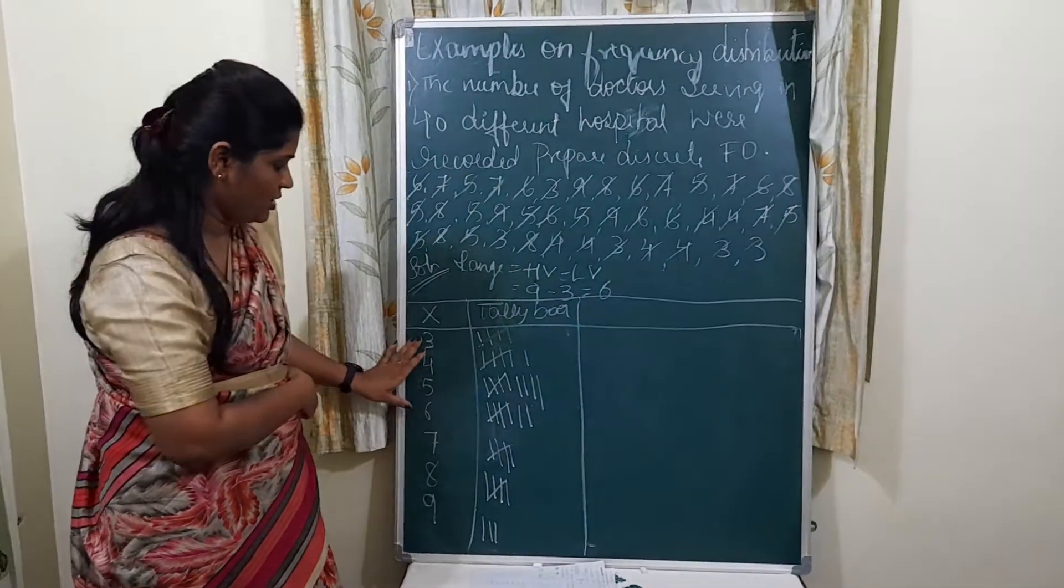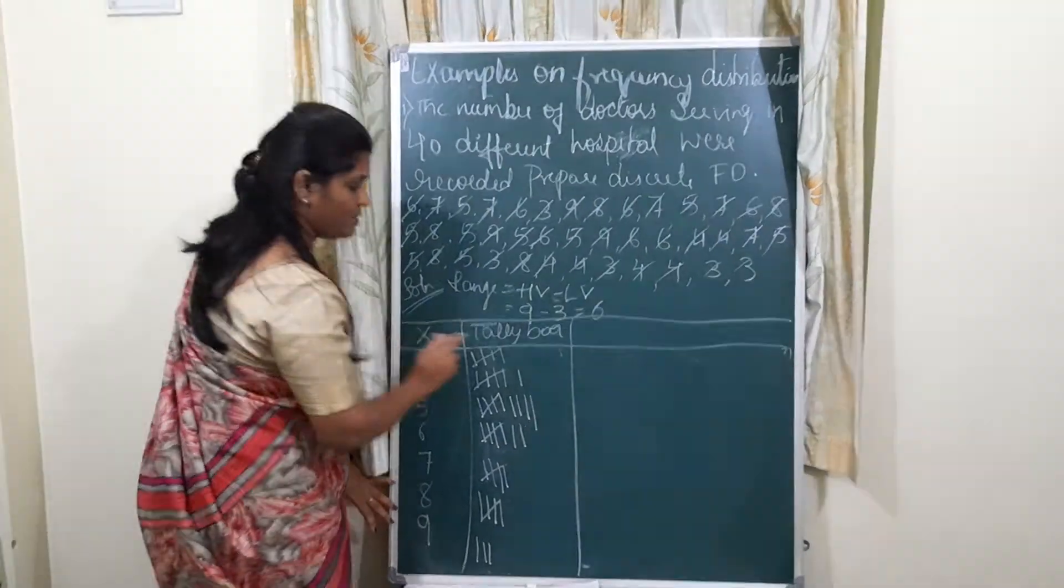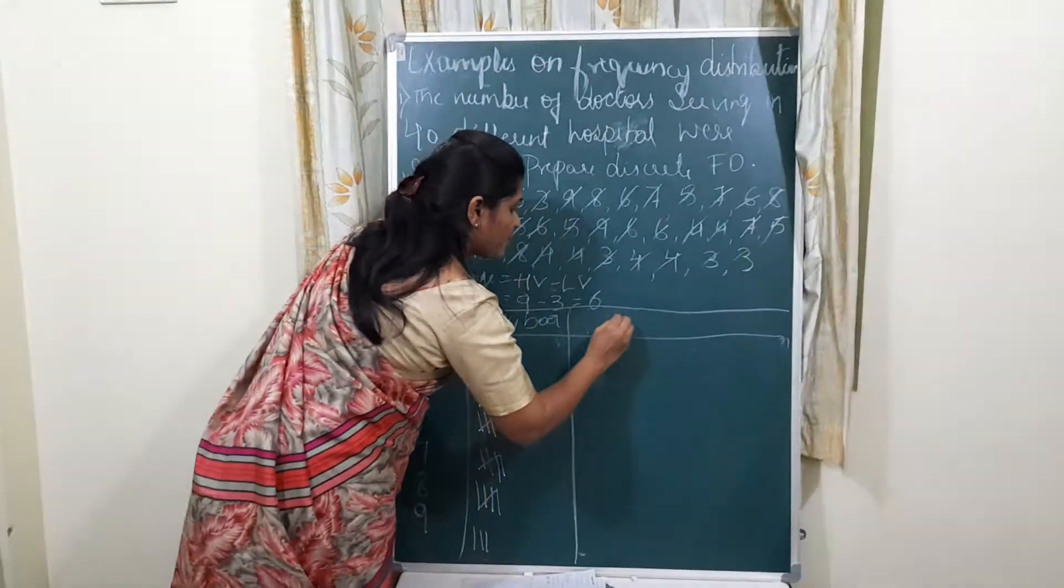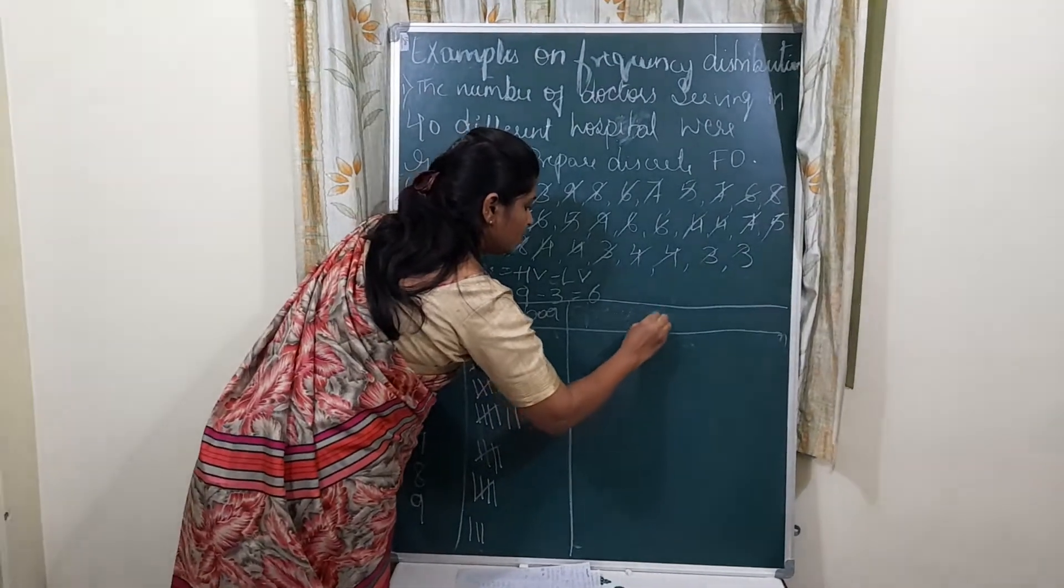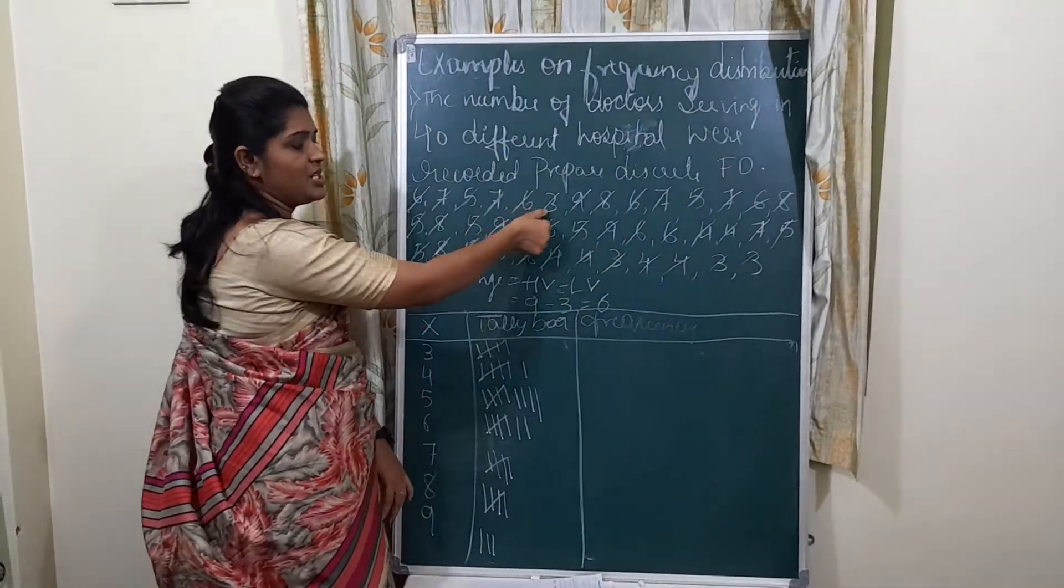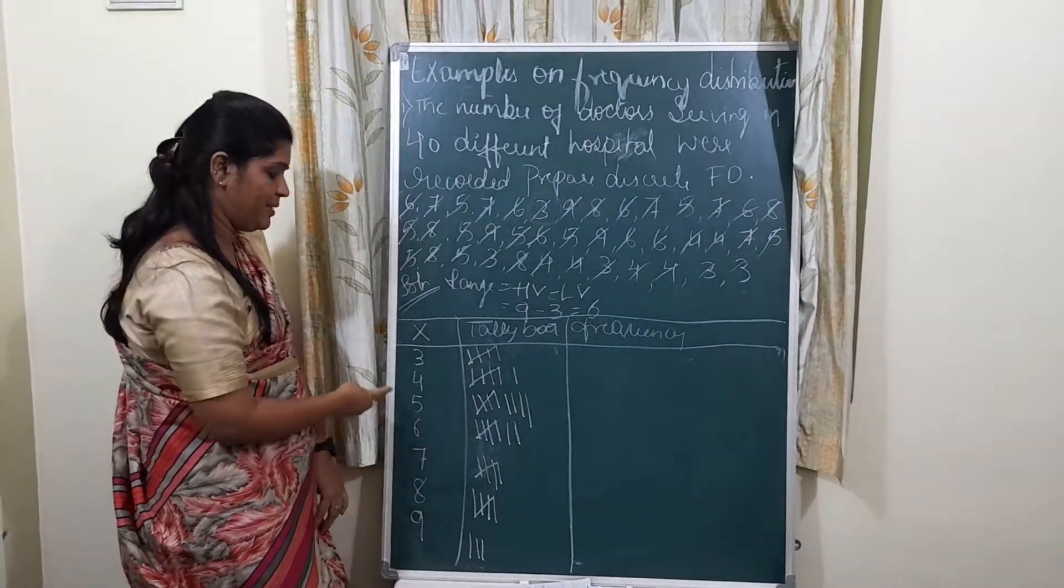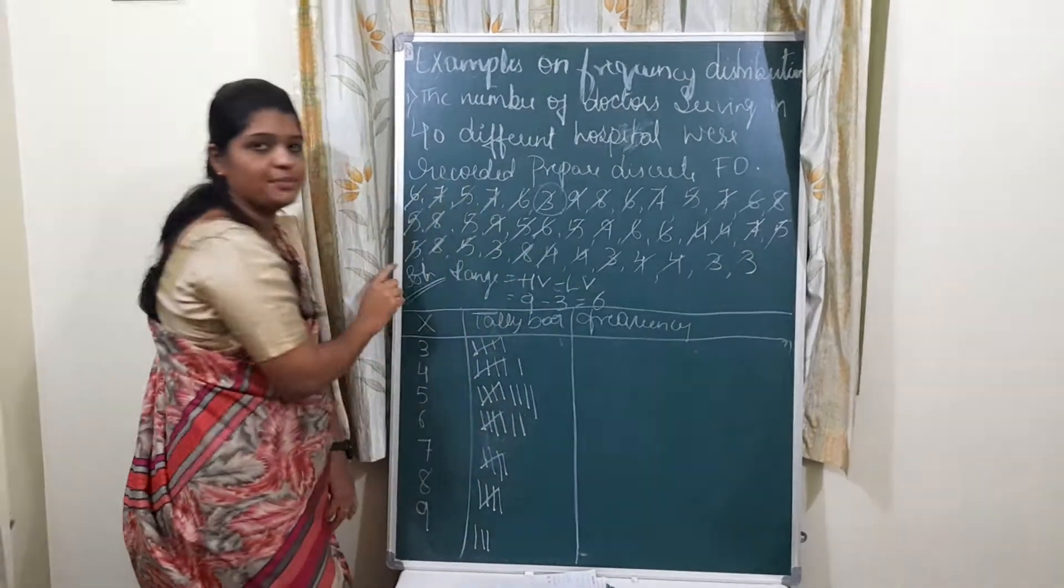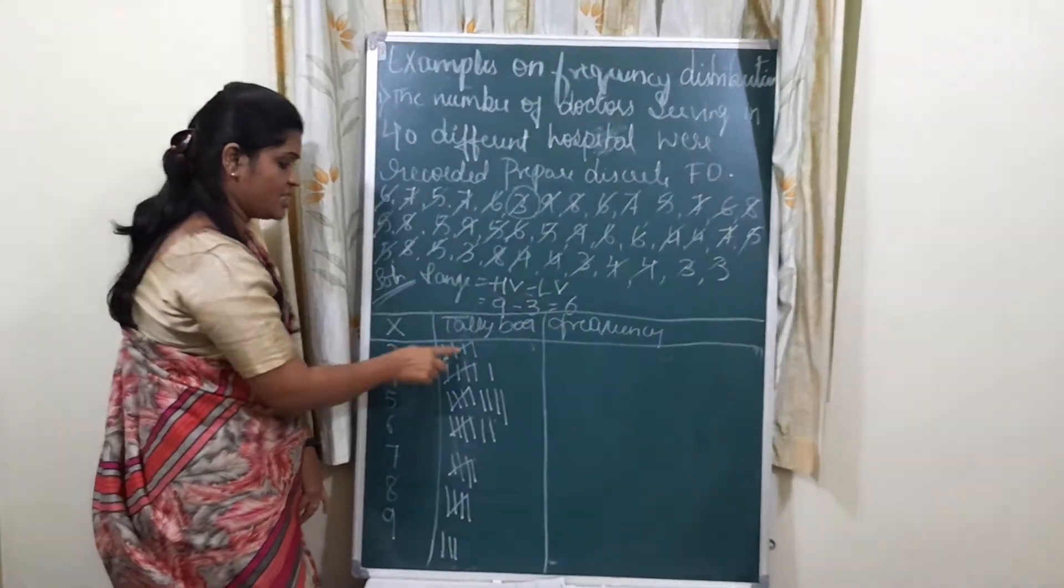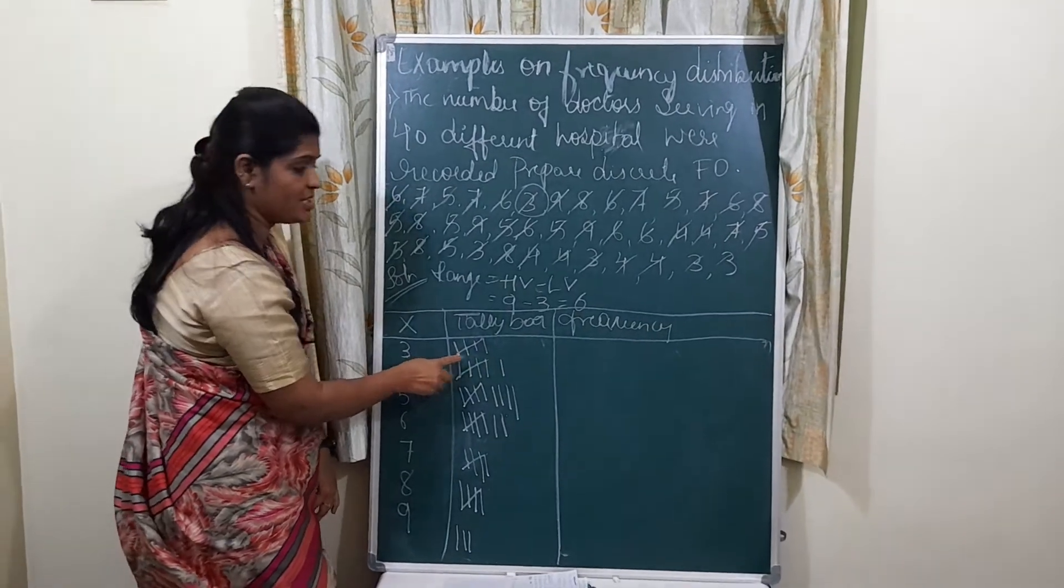We have allotted observation for a tally bar. This is what we are going to call frequency. And 3 is our observation - how many times they have repeated in this 40 observation? 3 has repeated 1, 2, 3, 4, and crossbar is 5.